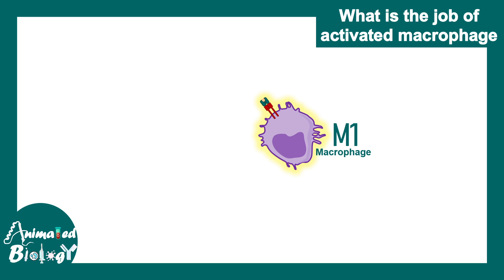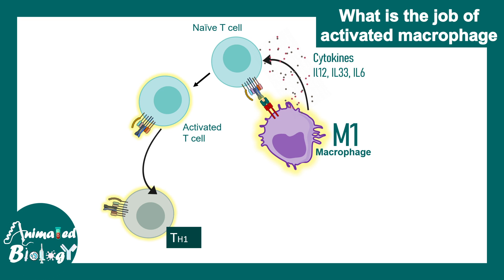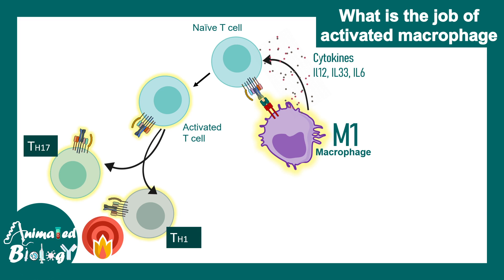M1 macrophages can present antigens on class 2 MHC molecules to naive T cells. Naive T cells become activated, and M1 macrophages secrete cytokines such as interleukin-12, IL-33, and IL-6 — all potent inflammatory cytokines — which trigger the differentiation of activated T cells into TH1 and TH17 subcategories. Both of these T cell subsets are pro-inflammatory in nature.